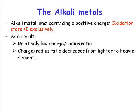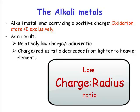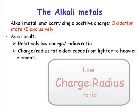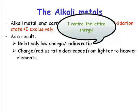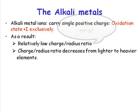What you're going to have is a monopositive charge on your ion. Because the positive charge is just one and you have an ion, you essentially have a relatively low charge-to-radius ratio. It's important to appreciate that the charge-to-radius ratio is a factor that controls the lattice energy. So what we have is a relatively weak monopositive charge. As you go down a group in the periodic table, what happens to the size of the atom, or indeed the ion? It increases.